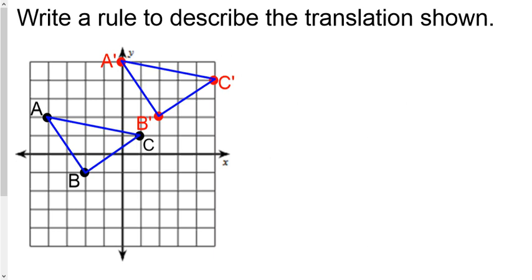First thing is pick one point, one of the original ones. We'll choose A. Don't choose a prime point, choose one of the original ones and then track it with left, right, up, down movements to its new version, the prime.